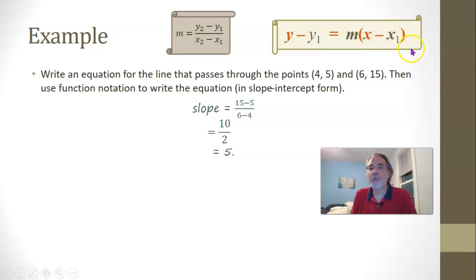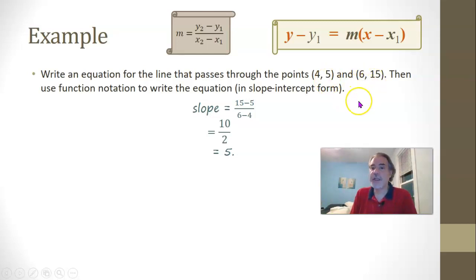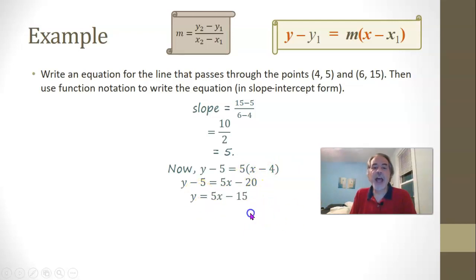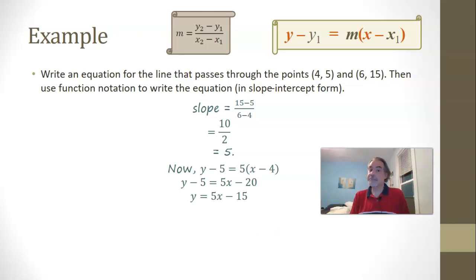Now we're ready for point-slope form. Putting 5 in for m, and using the first point — 4 and 5 — for x1 and y1: y minus 5 equals 5 times x minus 4. Without the parentheses, that's y minus 5 equals 5x minus 20. Adding 5 to both sides gives y equals 5x minus 15. In function notation, f of x equals 5x minus 15.